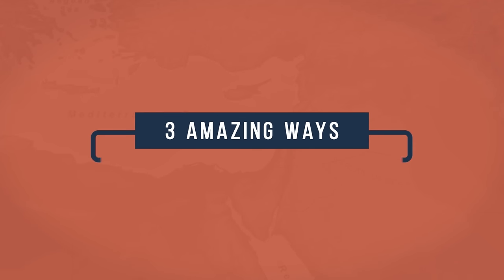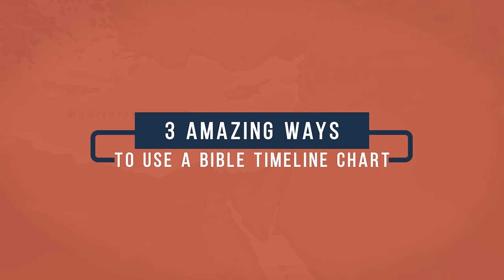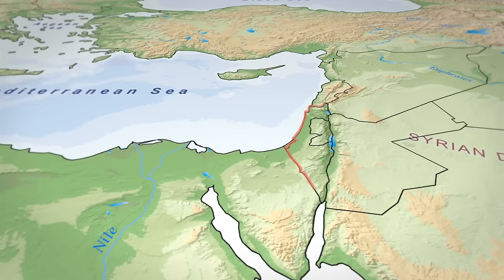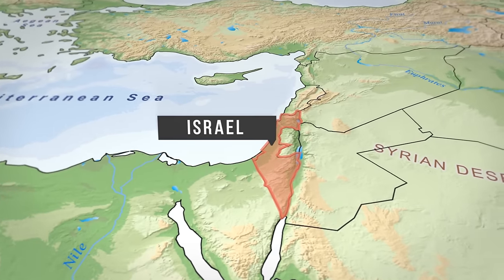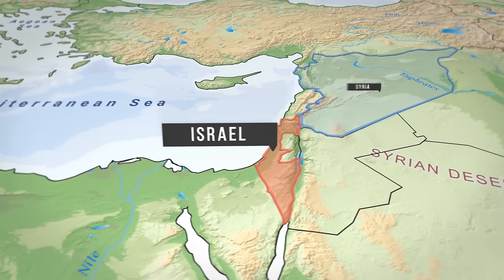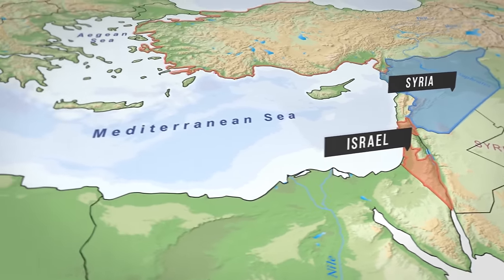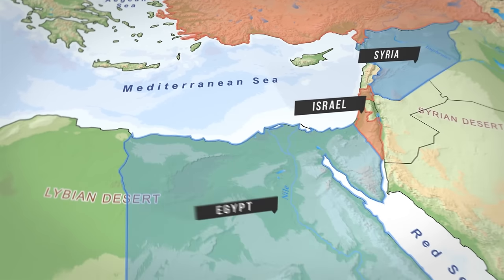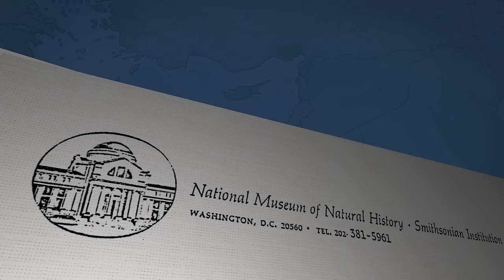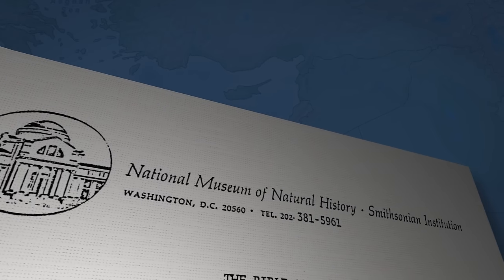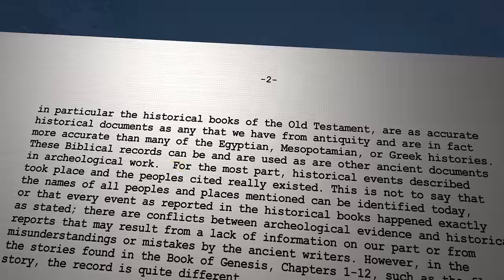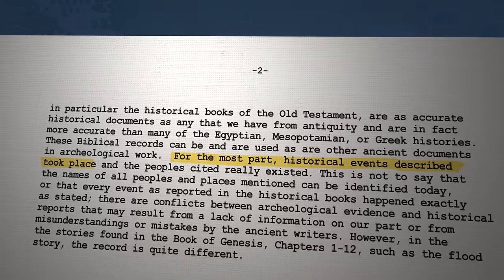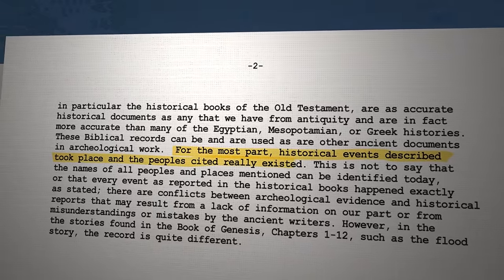Three amazing ways to use a Bible timeline with world history to show the historical accuracy of the Bible. The small area of Israel has been in the crosshairs of ancient and modern superpowers for 4,000 years, and the Bible tells us about it. The Smithsonian Institute confirms the Bible is an essential resource for archaeologists. For the most part, the historical events described took place. The people cited really existed.